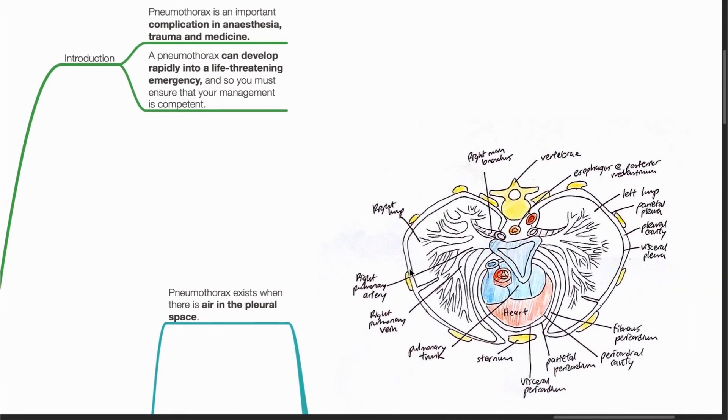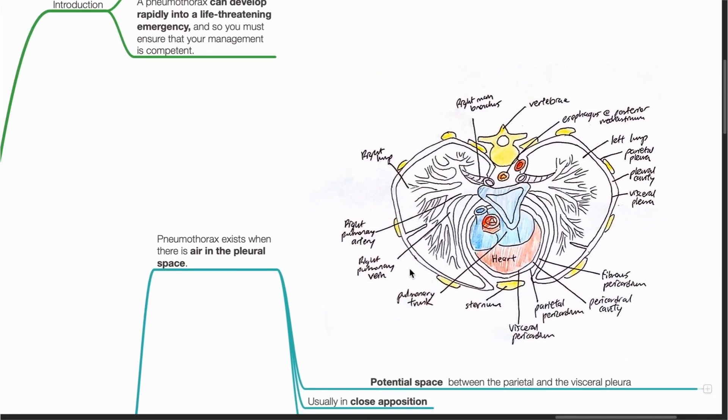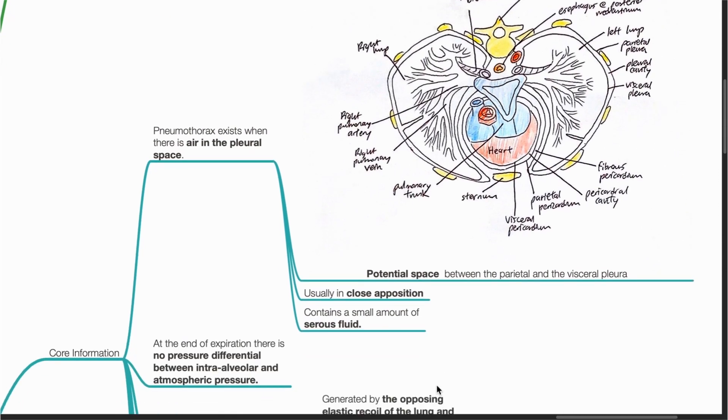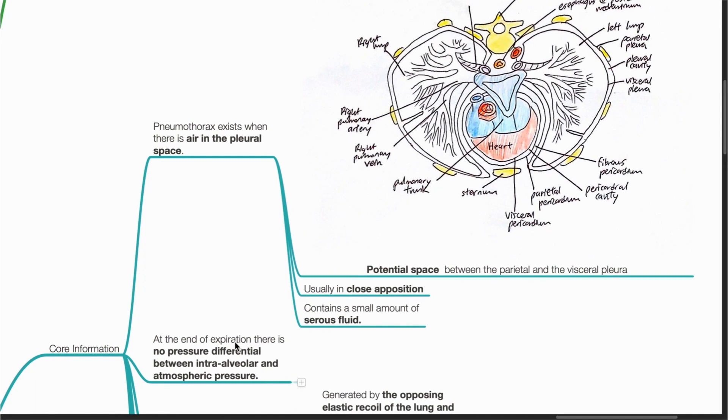Pneumothorax exists when there is air in the pleural space. The pleural space is a potential space between the parietal and visceral pleura, usually in close apposition and contains a small amount of serous fluid. At the end of expiration, there is no pressure differential between intraalveolar and atmospheric pressure.